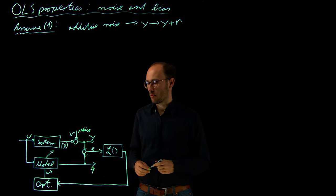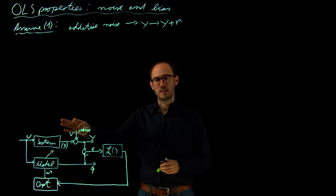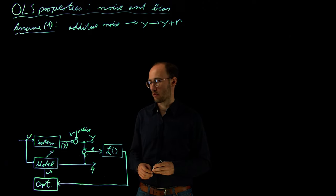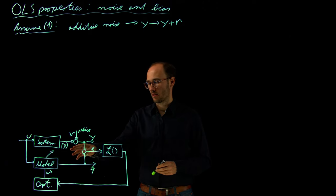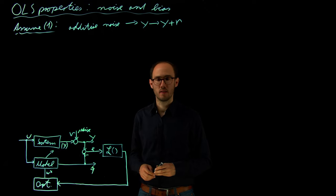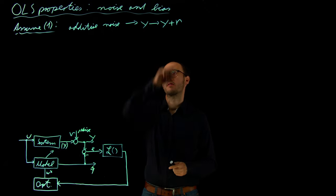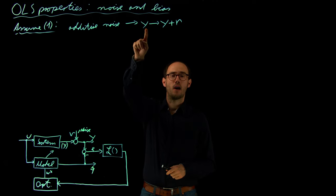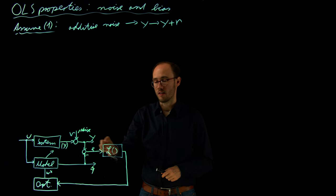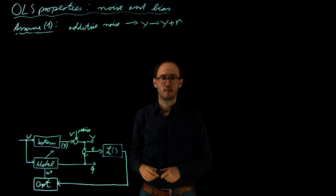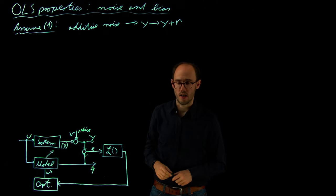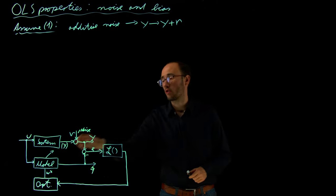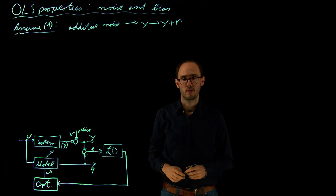And the only important new point is here that we will consider noise again on the output only of our measured system. And we call this noise, this additive noise term nu, which is also shown here in a somehow sloppy notation that we say our outputs of the system, which we can observe in order to calculate the loss function, is basically a linear combination of our true output and the additive noise term.